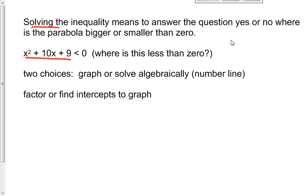We have two choices on how to solve these. We can either make a graph or solve algebraically. If solving algebraically, you use a number line to help you. No matter which method we choose, we want to factor to find x-intercepts. Those x-intercepts will be used on both the number line and on a graph. So factoring is the method of choice for solving the inequality.